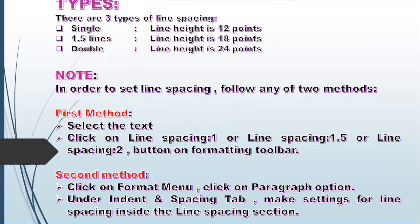There are three types of line spacing: single, 1.5, and double. Single line spacing is equivalent to 12 points. 1.5 line spacing is equivalent to 18 points. Double line spacing is equivalent to 24 points. To set line spacing: select the text, then click the line spacing 1, line spacing 1.5, or line spacing 2 button.